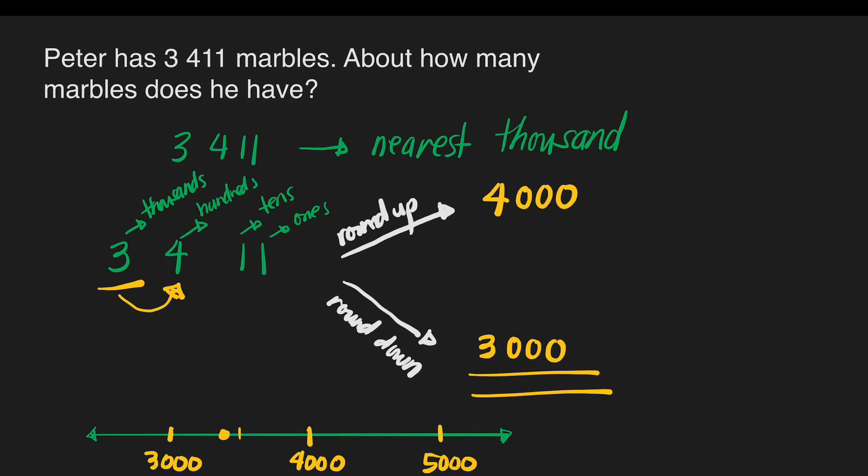What are the numbers less than 5? These are 4, 3, 2, 1, and 0. Then, we do round down.